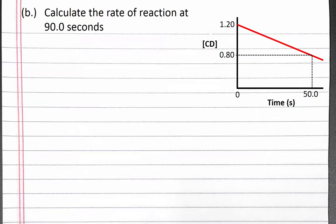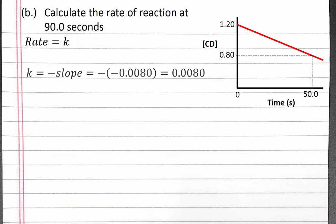Next we'll calculate the rate of reaction at 90 seconds. Since this is a zero-order reaction, our differential rate law is rate equals the rate constant K. The rate constant is equal to negative slope, which is 0.0080. So our rate is equal to 8 times 10 to the negative third molar per second. Our rate does not depend on concentration, so it will be a constant.